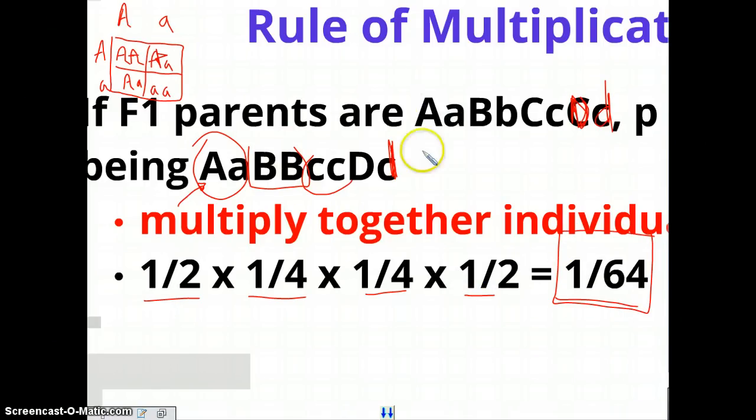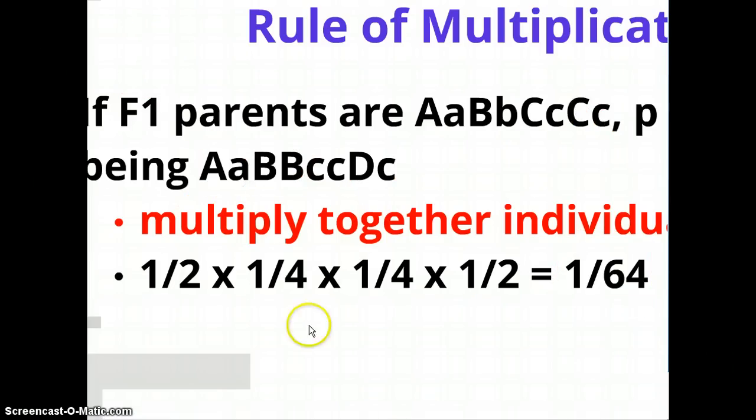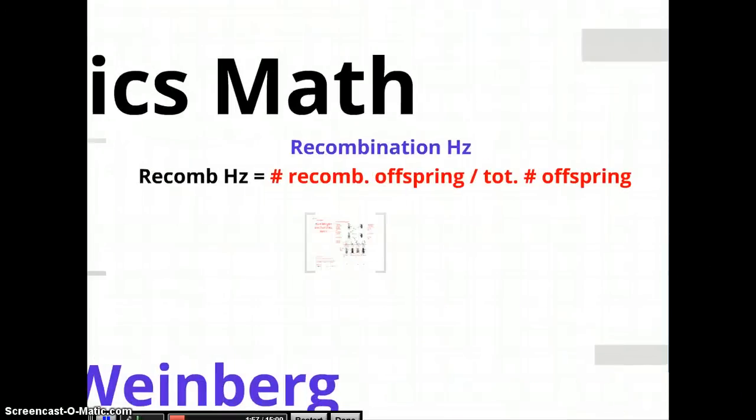So again, don't try and figure these out with Punnett squares. Just multiply together the individual probabilities. All right. I'm sorry I had to pause that. I've never paused anything before, so hopefully it is not too annoying on your end.